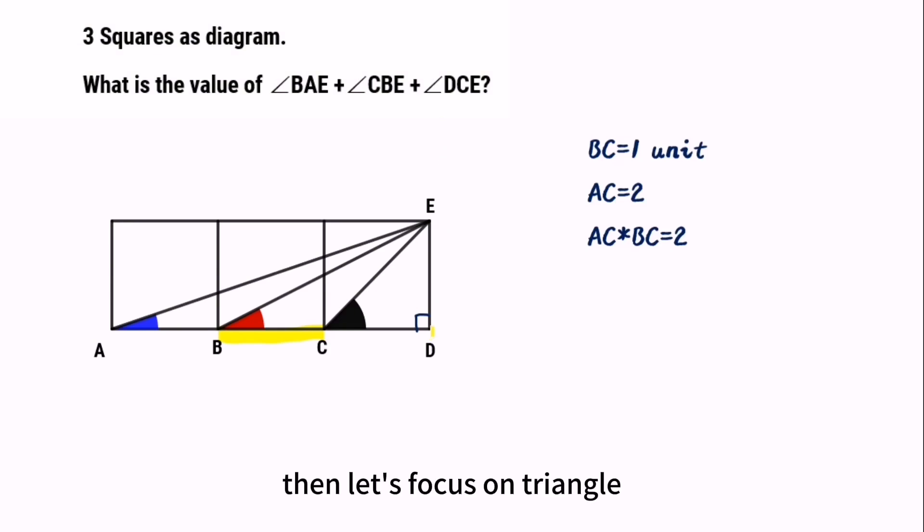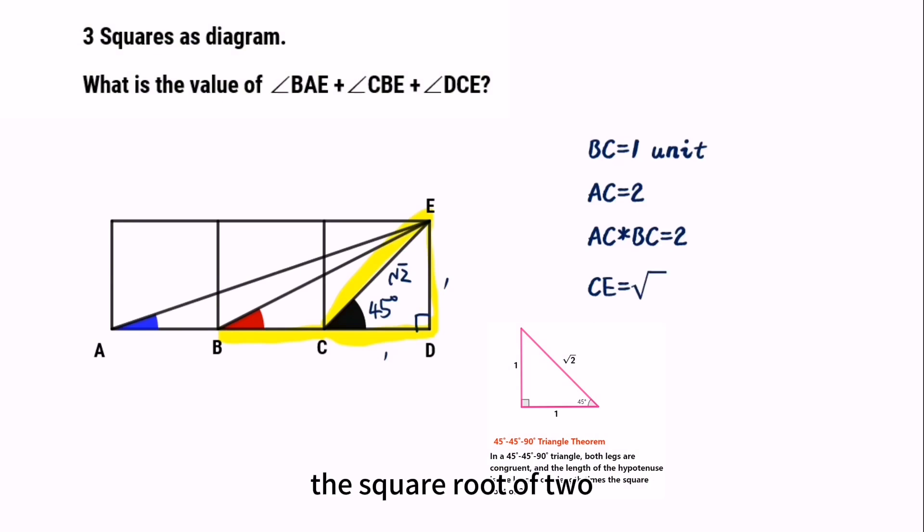let's focus on triangle DCE. Obviously, it's an isosceles right triangle, so this angle is 45 degrees. So, we can get CE equals the square root of two.